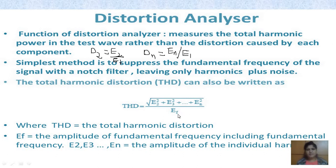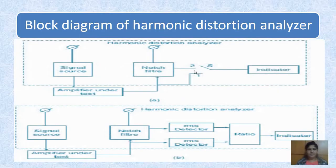In the percentage THD formula, EF is the amplitude of the fundamental frequency, and E1, E2, E3, up to En are the amplitudes of the individual harmonics.